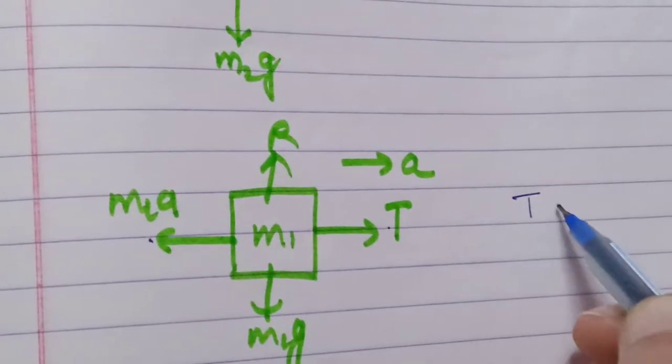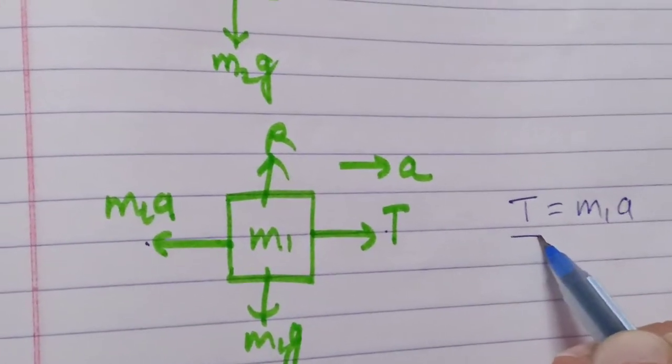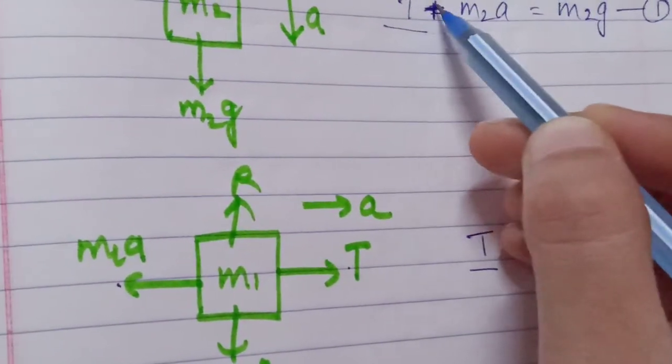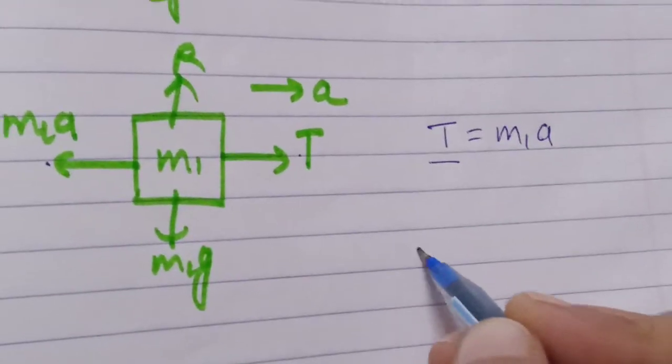Put the value of T in equation 1. This is m2 g minus m2 a plus m1 a is equal to zero, so m2 g is equal to m2 a plus m1 a.